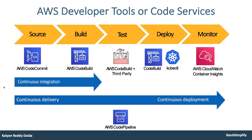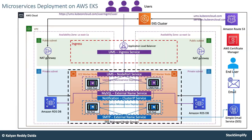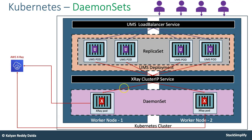Then we will move on to the microservices section with two independent microservices built exclusively for testing microservices service discovery, distributed tracing, and canary deployments. We are going to use a user management microservice and a notification microservice. When a developer uses Postman to create a user, it will call the notification API and send an email to the end user. We will deploy these using service discovery with a UMS Node Port service, MySQL ExternalName service, and notification Cluster IP service — implementing the entire service discovery end-to-end.